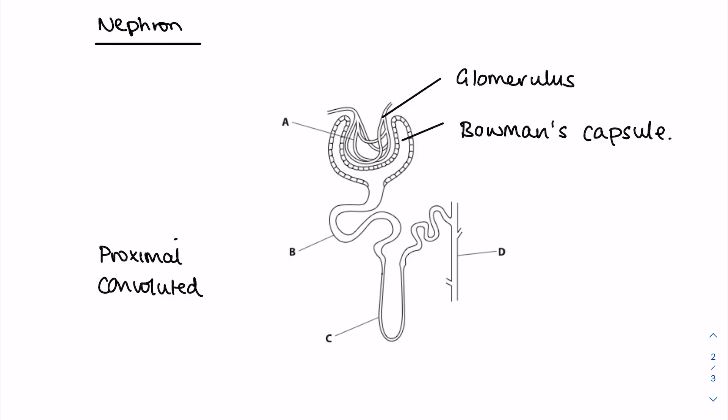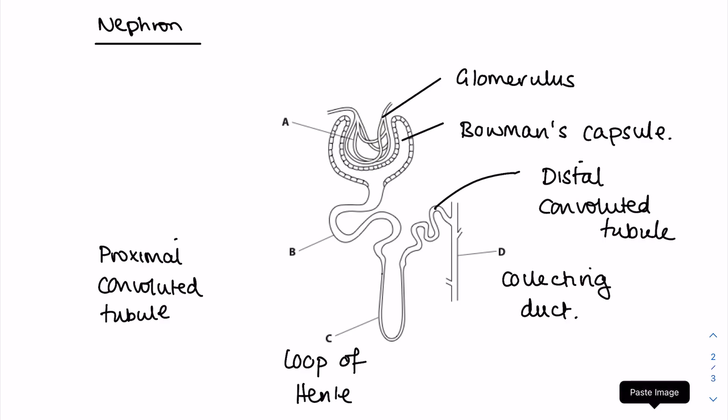Proximal meaning first, convoluted meaning coiled. Then this longer section is the loop of Henle. Here's the second coil tube, or the distal convoluted tubule. And then part D is super important because this is where ADH acts and helps to restore the water balance of the blood. Part D is the collecting duct, which will drain into the ureter and then finally the bladder.